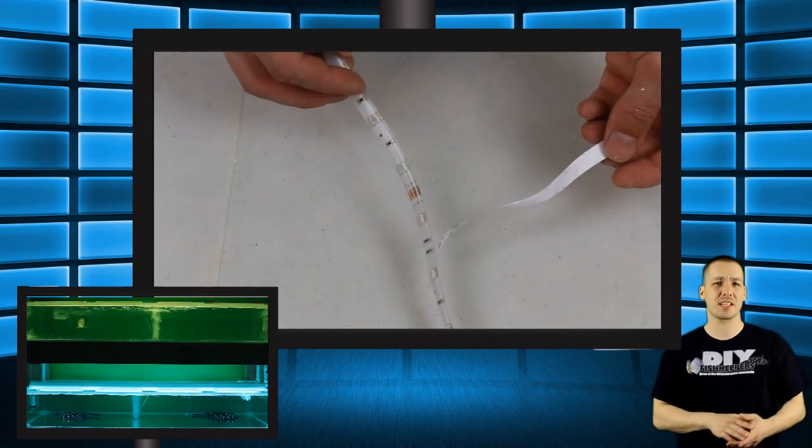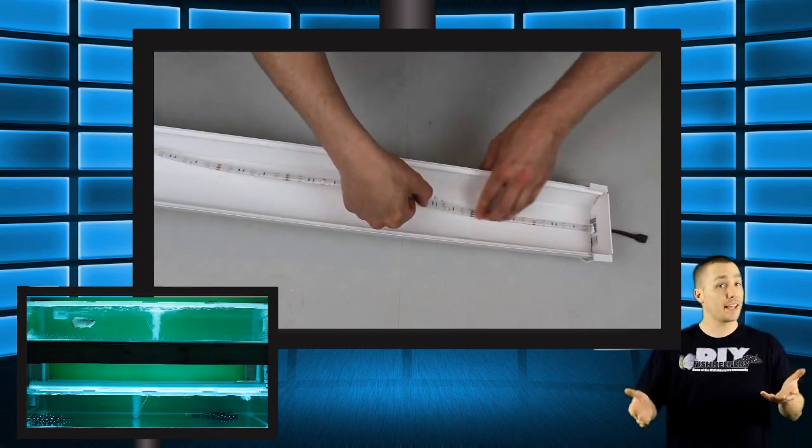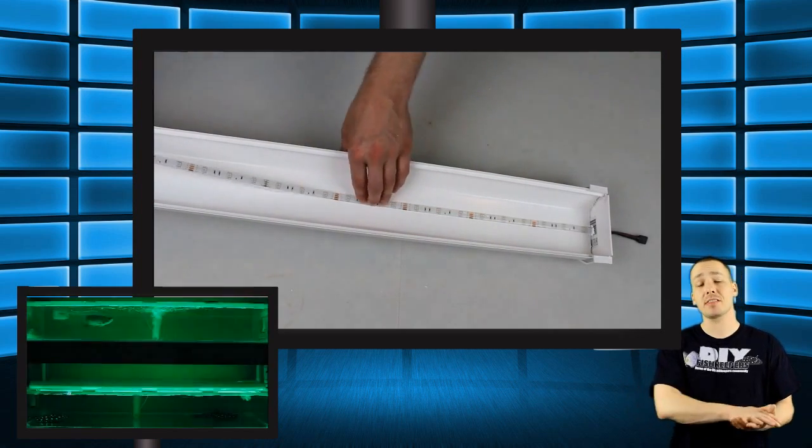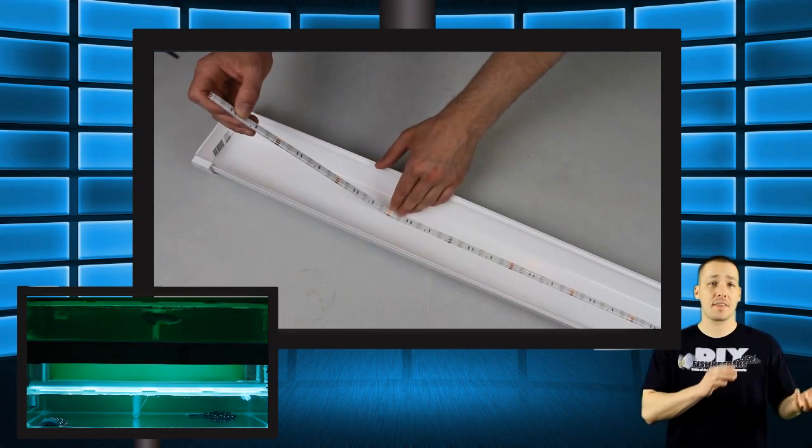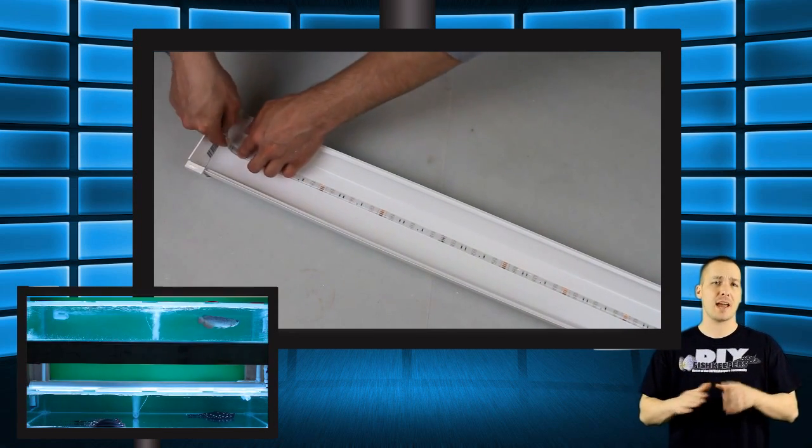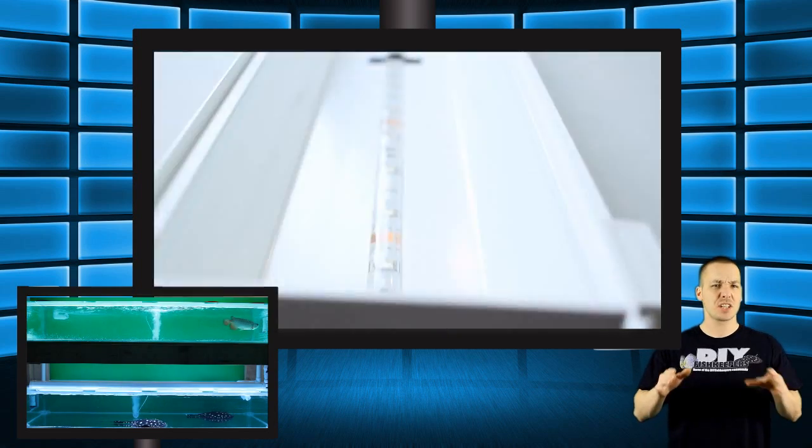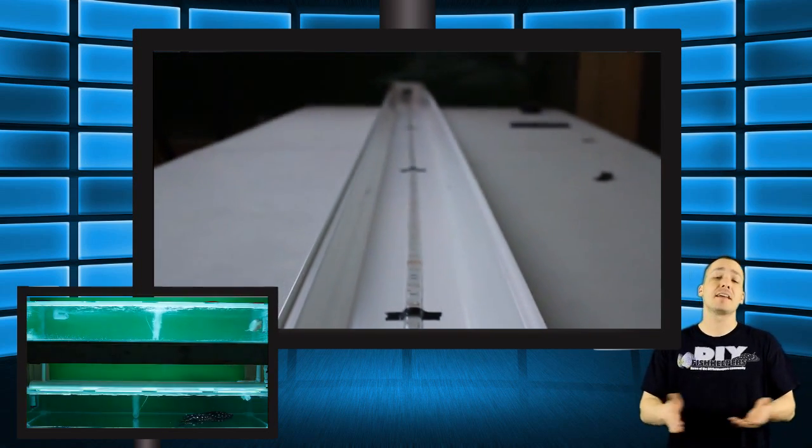Since the LED strip comes with double-sided tape already installed on the strip, all I had to do was remove the backing of the tape and lay the strip into place. With some electrical tape, I covered the hole of the entrance on the end cap so no light would leak. I also laid a few pieces every so often on the strip itself just to reinforce it. And that was it. It was ready to be plugged in and turned on.